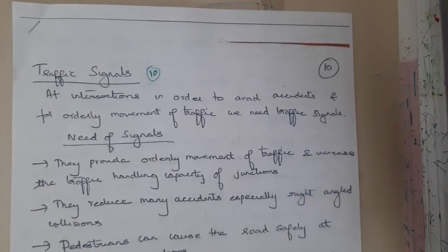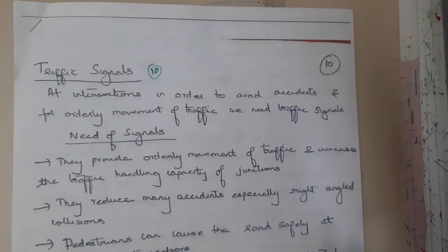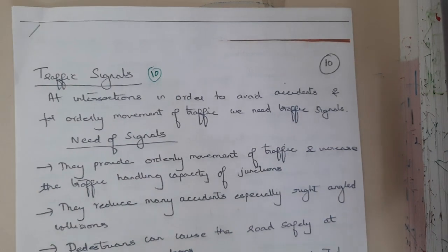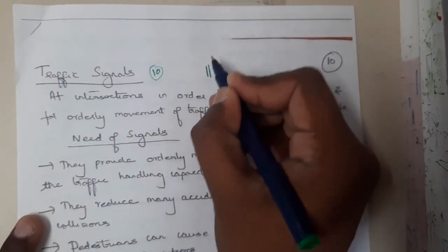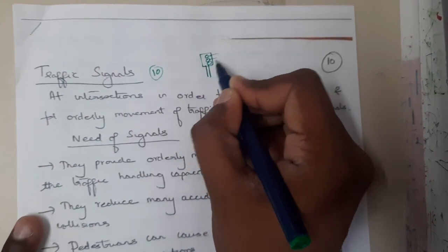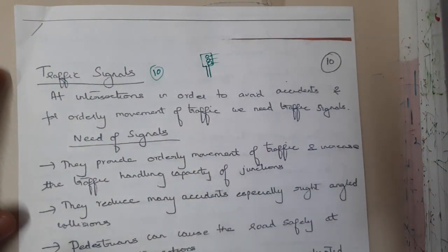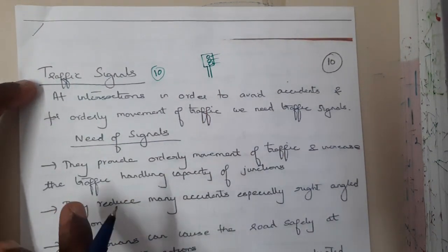Hello guys, we are back with our next lecture. In this lecture, let us go through traffic signals. This is a basic concept that everyone should know. Traffic signals are used to avoid collisions. They have three different colors and are used to reduce the chances of collisions or accidents.